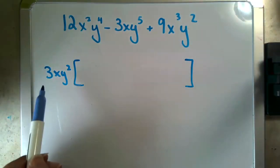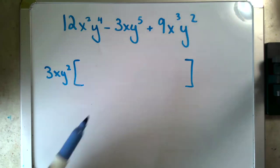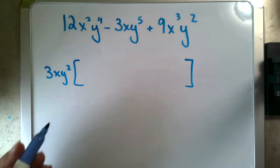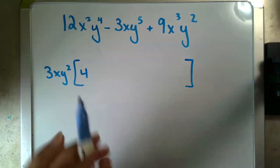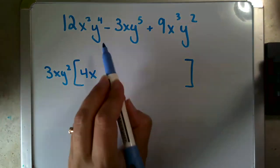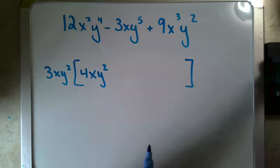And now I'm going to factor this out of each of these terms and write what is left. Now, don't forget, factor basically means division. So my 12 divided by 3 leaves me with 4. My x squared divided by x leaves me with x. And my y to the fourth divided by y squared leaves me with y squared, and that's what's left of my first term.